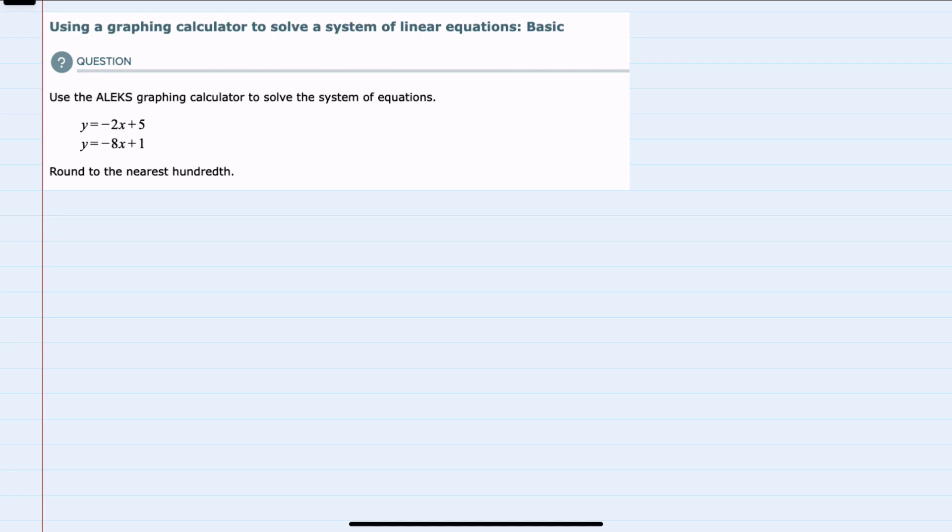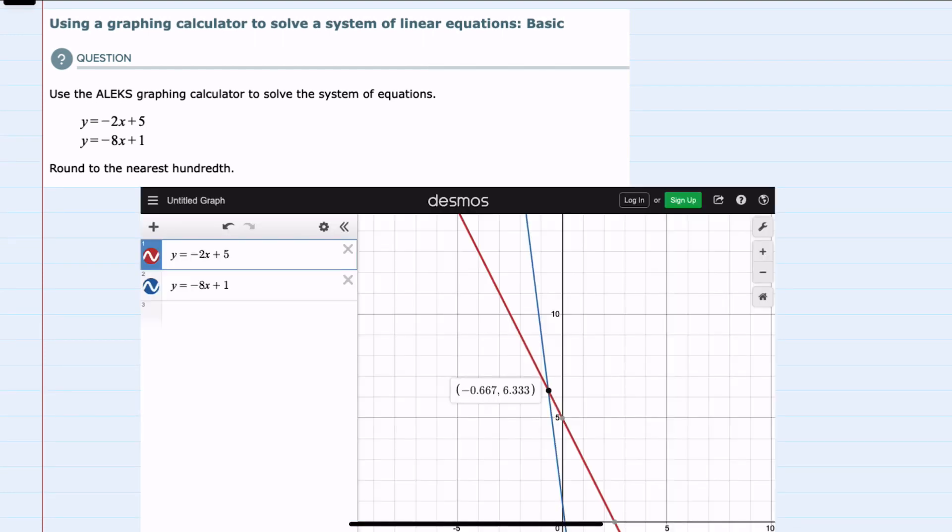Here we're using a graphing calculator to solve the system of equations between y equals negative 2x plus 5 and y equals negative 8x plus 1, rounding our solutions to the nearest hundredth. To do so, I use the online graphing tool Desmos.